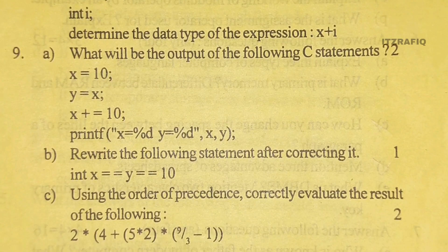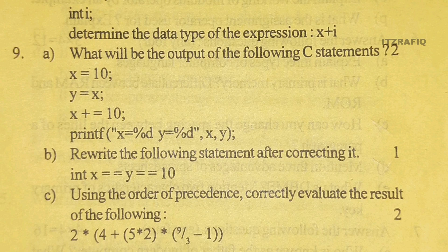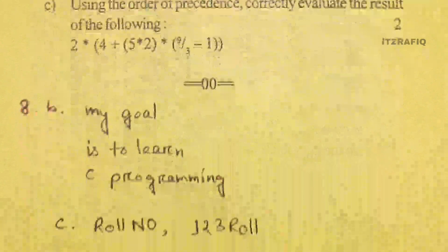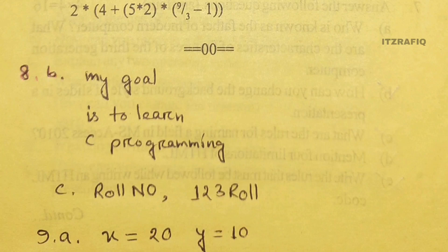In number 9a, first x value is 10. Next, y equals x, meaning y value becomes 10. Next line, x plus equals 10, meaning x value will be x plus 10. X is already 10, so 10 plus 10 equals 20. Printf will output x equals percentage d, y equals percentage d - x is 20, y is 10. Answer: x equals 20, y equals 10.